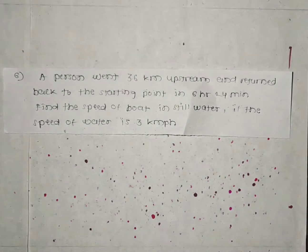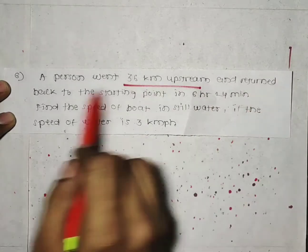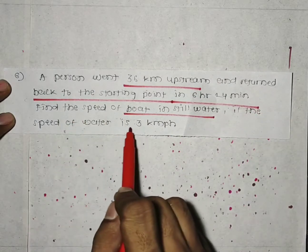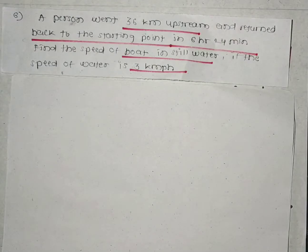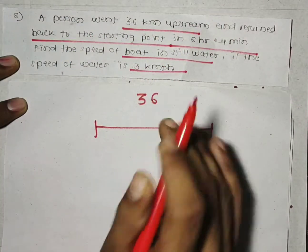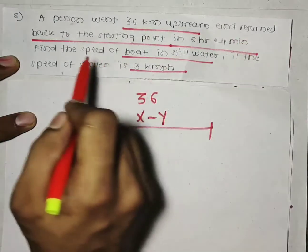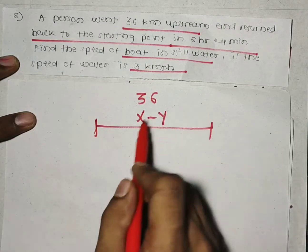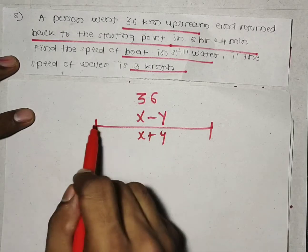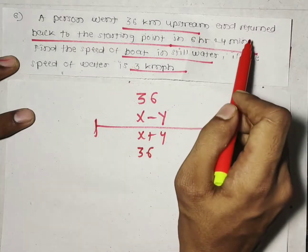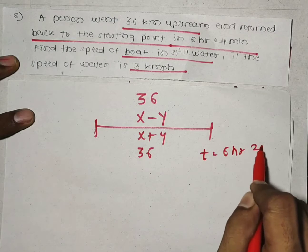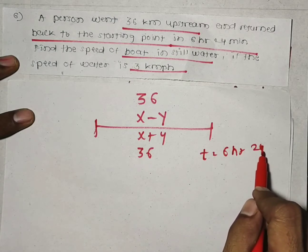Now let's see the next question. A person went 36 km upstream and returned back to the starting point in 6 hours 24 minutes. Find the speed of the boat in still water — x — if the speed of the water is 3 km per hour. Upstream means x minus y; while coming back it is downstream x plus y, and the distance remains 36 km each way. The total time 6 hours 24 minutes must be converted to hours by dividing the 24 minutes by 60.